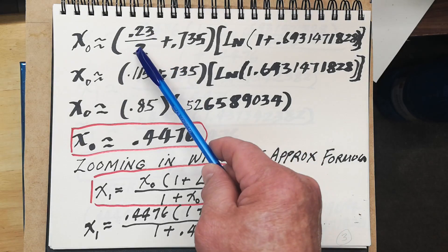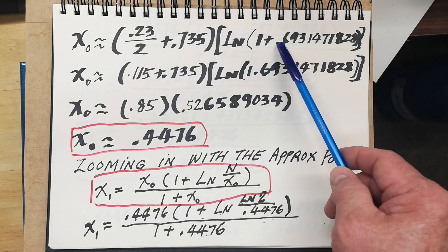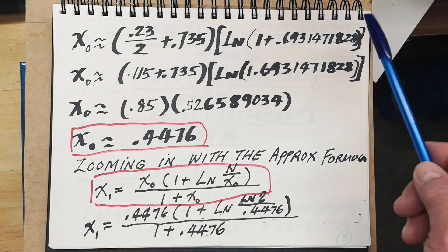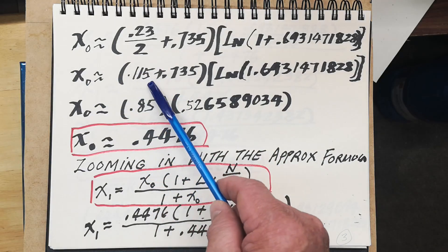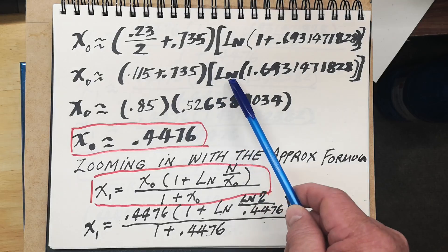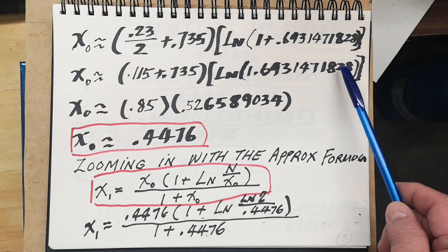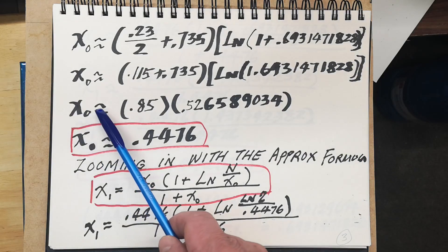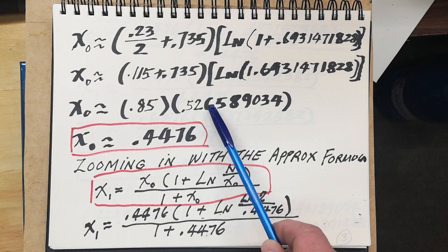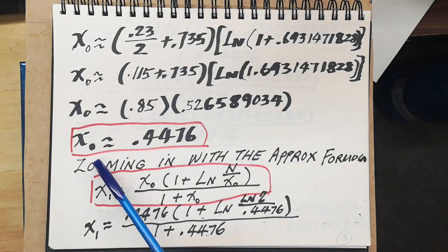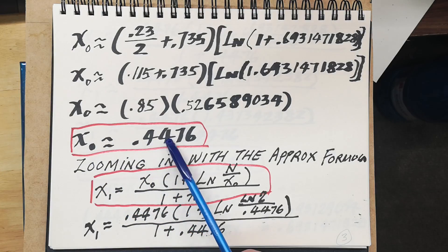So it equals 0.23 divided by 2, plus 0.735 times ln of (1 + 0.6931471828). So x₀ is approximately equal to 0.115 plus 0.735 multiplied by ln of 1.6931471828. The initial x is approximately equal to 0.835 multiplied by 0.526589034, giving x₀ approximately equal to 0.44476.